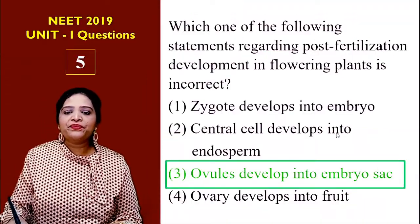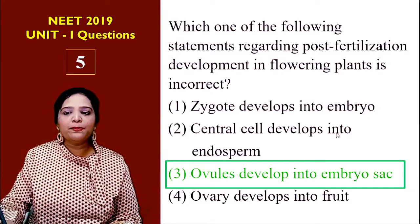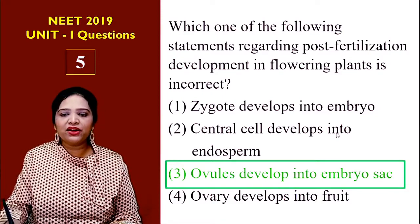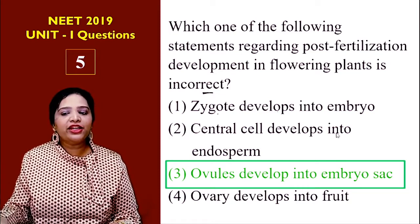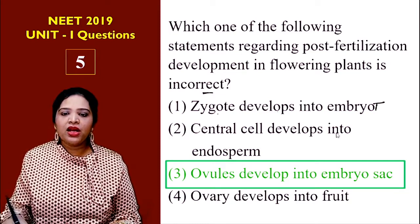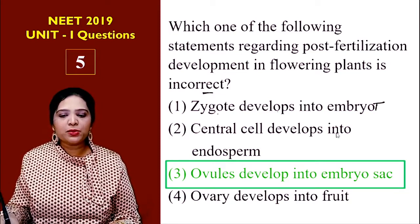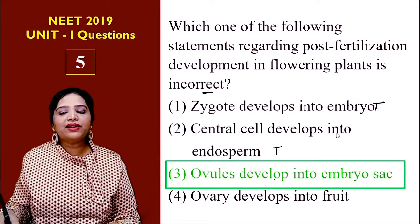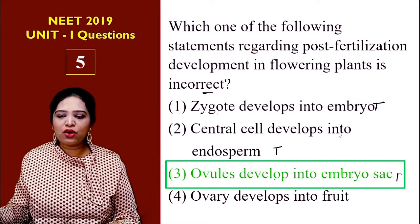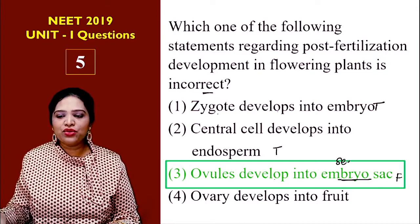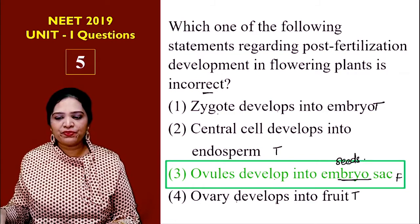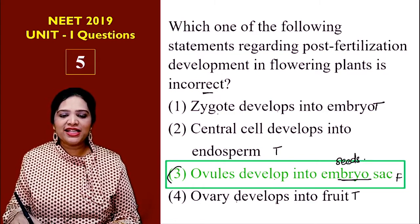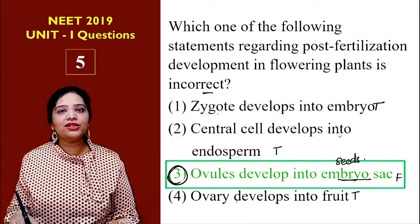Going back to the question: 'zygote develops into embryo' — this is true. 'Central cell develops into endosperm' — true. 'Ovules develop into embryo sac' — this is false; ovules develop into seeds. 'Ovary develops into fruit' — true. So the correct answer is number 3, which is the false statement.